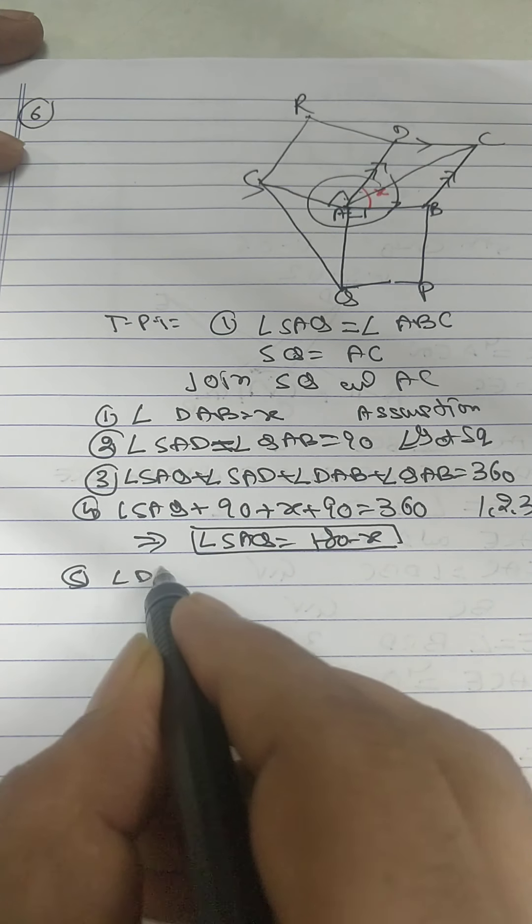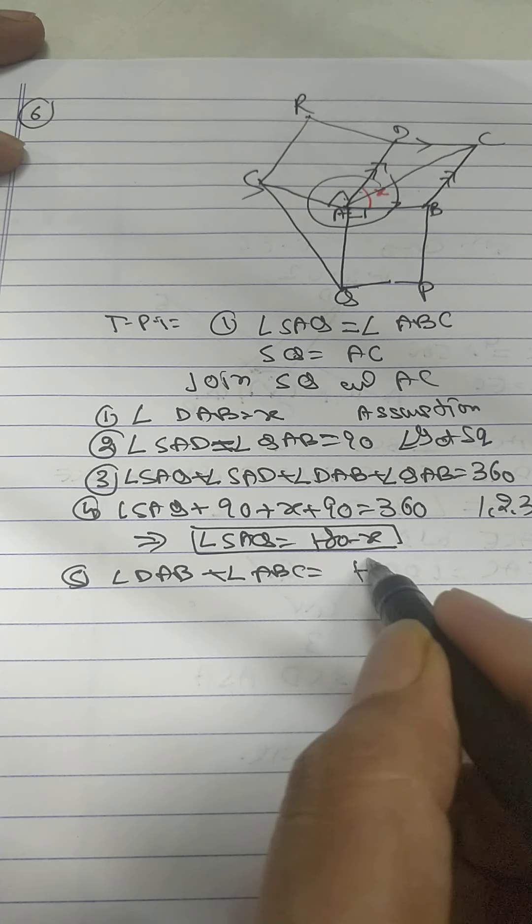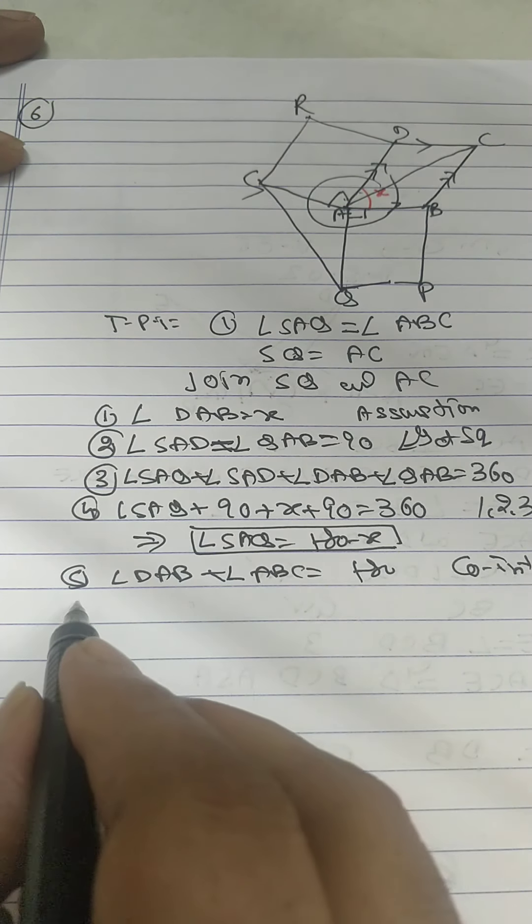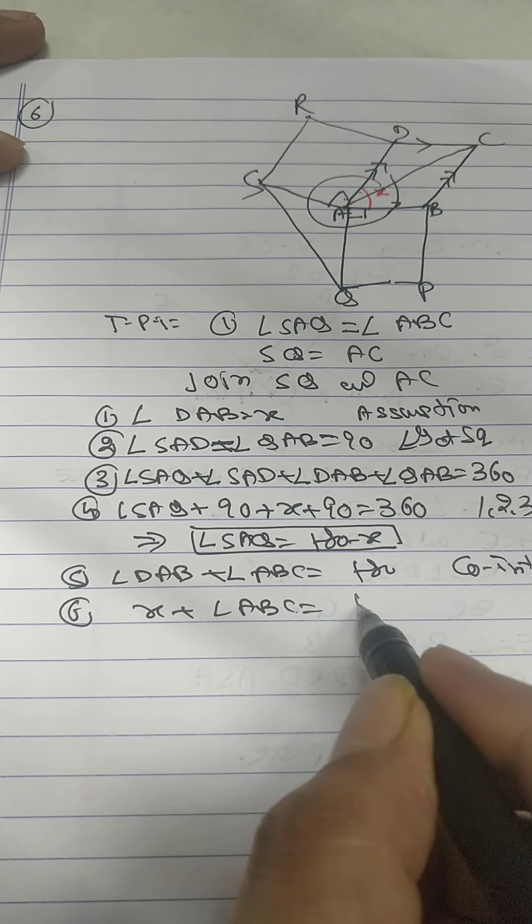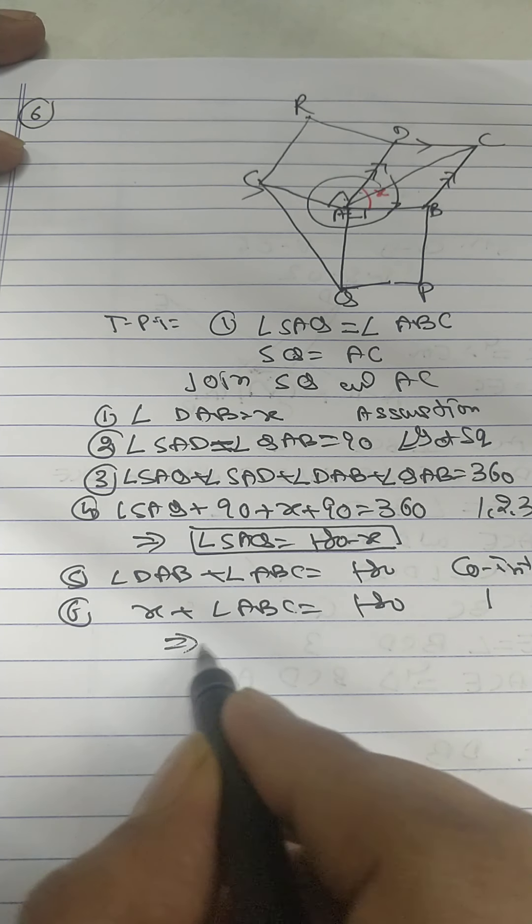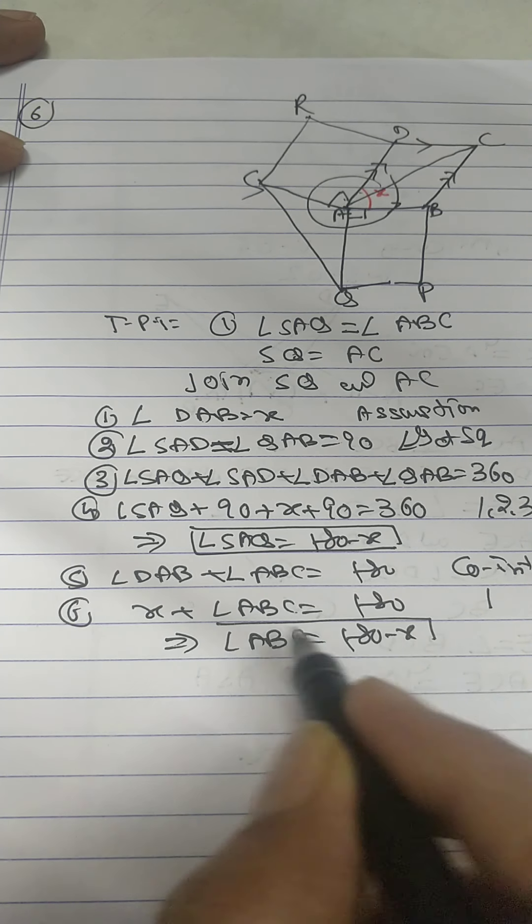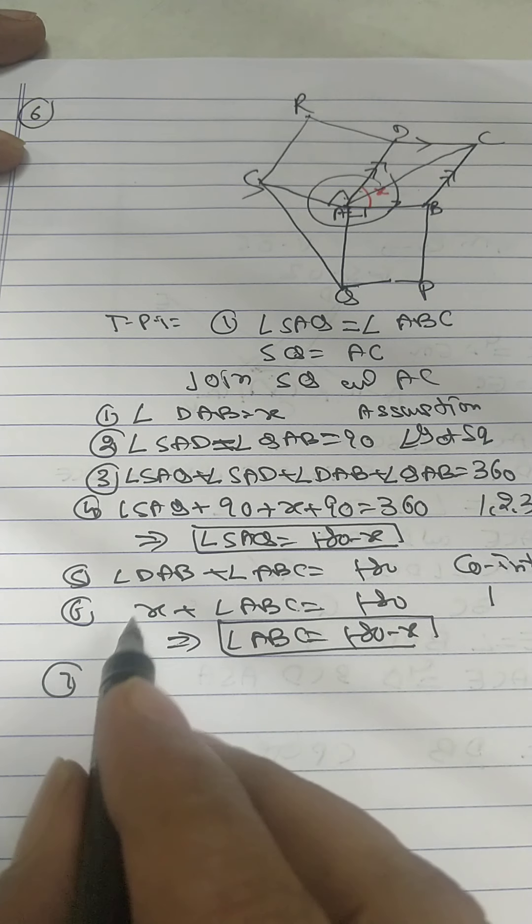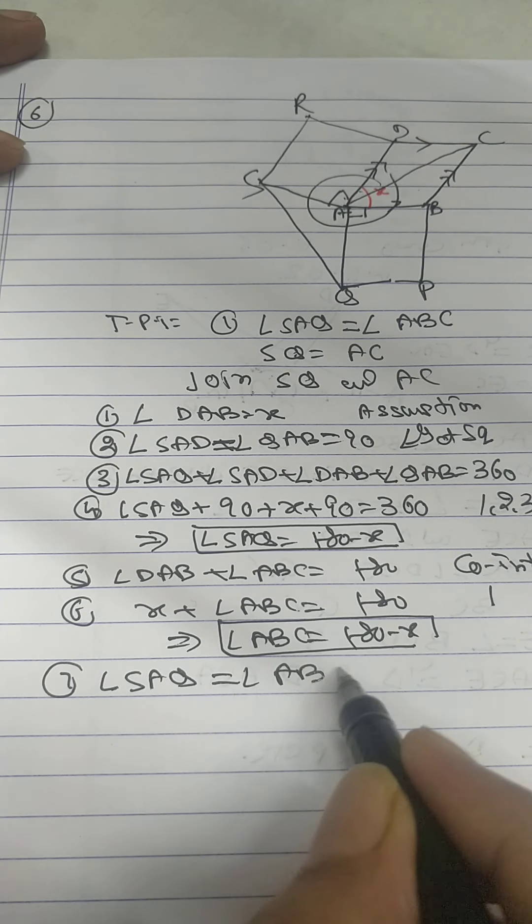Now in a parallelogram angle DAB plus ABC is 180, co-interior. X plus angle ABC is 180 from statement X value we know from 1. So that give me angle ABC is 180 minus X. So these two are angle SAQ equal ABC, both are same from statement 4 and 6.